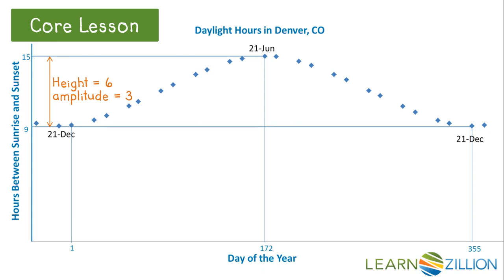We can choose to model this with a cosine function, with H equal to 172 on June 21st, and K equal to 12, which is halfway between 9 and 15. Here is the equation that models the daylight hours in Denver.